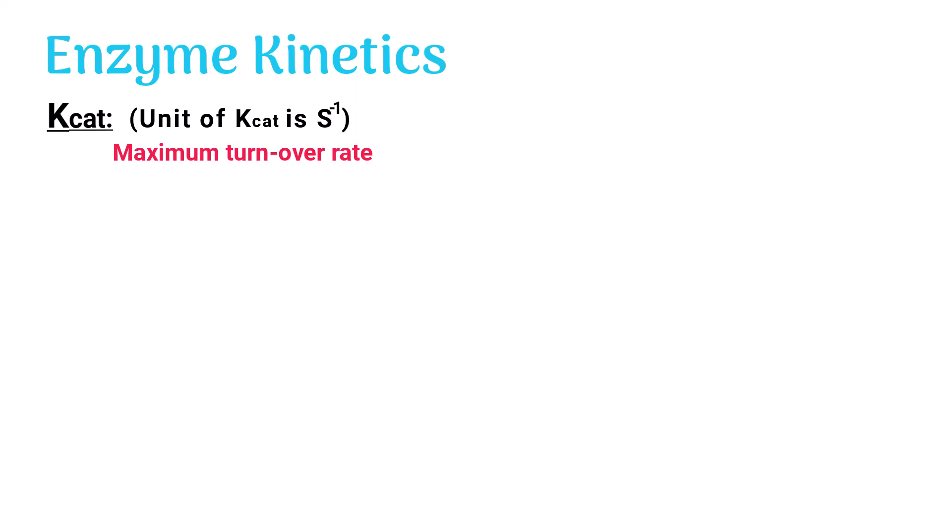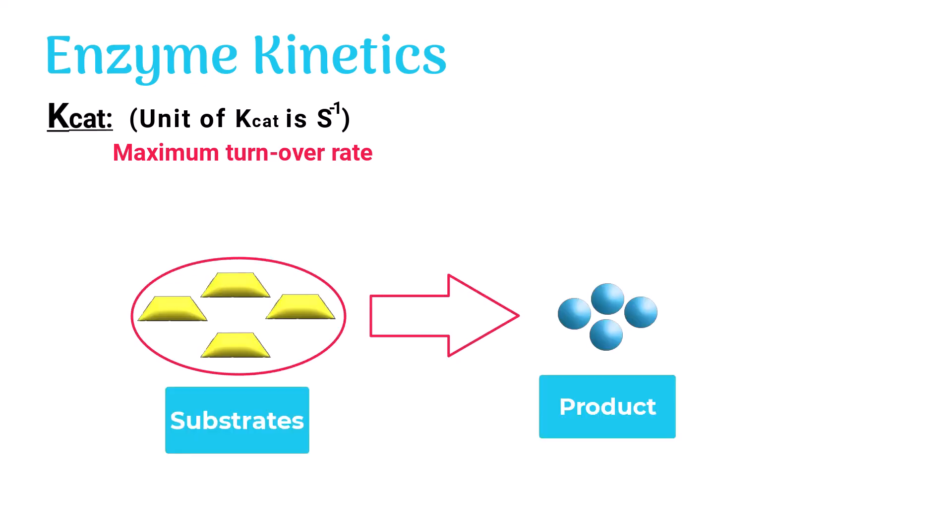In simple words, KK represents the total number of substrate molecules converted to product by an enzyme in one second.